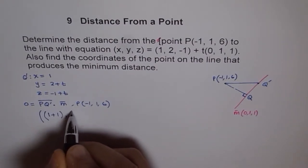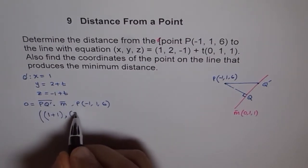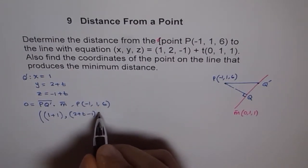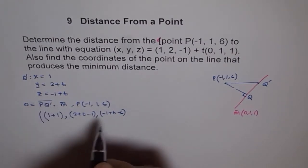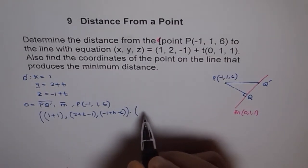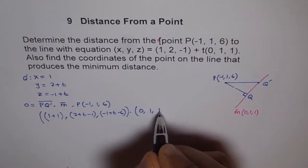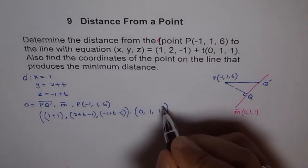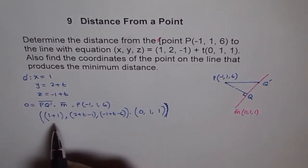The Y direction number is 2 plus T minus 1, and the Z direction number is minus 1 plus T minus 6. We take the dot product with M = (0, 1, 1). Multiplying by 0 makes the X term vanish. This is our vector PQ', and this is our direction vector M.